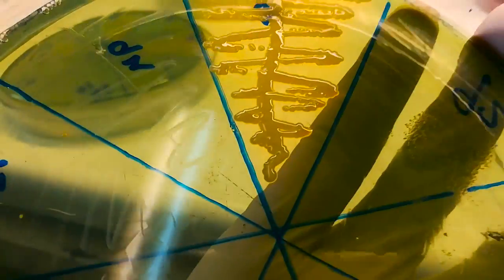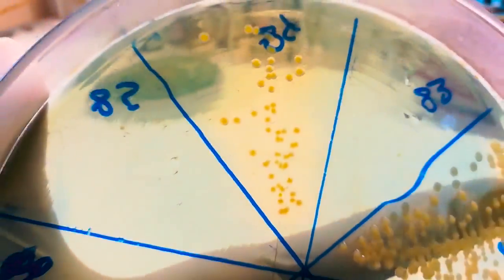Any bacteria or yeast that are present in the urine sample grow over the next 24 hours as small circular colonies.